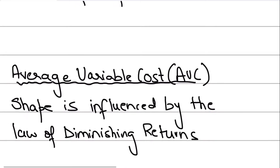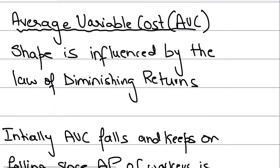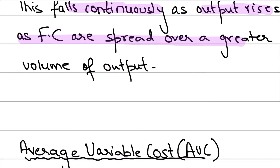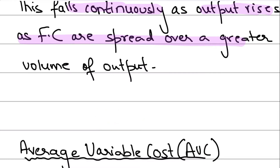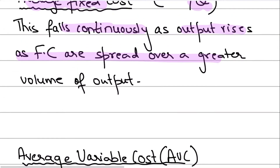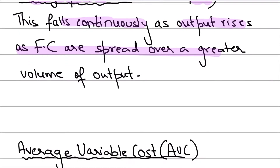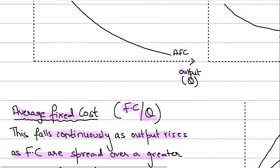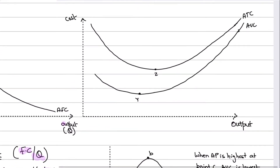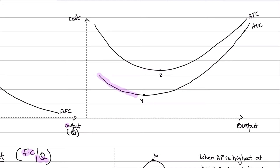Now as far as the average variable cost is concerned, I want you to pay full attention. Average variable cost represents variable cost per unit. Remember from the previous videos when we discussed marginal product and average product: we said that the average is derived by the marginal. If the marginal is greater than the average, the average goes up; if the marginal is less than the average, the average goes down. So the average variable cost initially falls — it's downward sloping — and then after a certain point your average variable cost goes up.